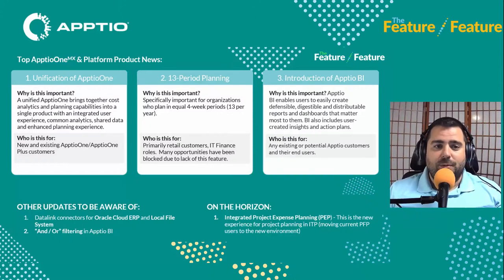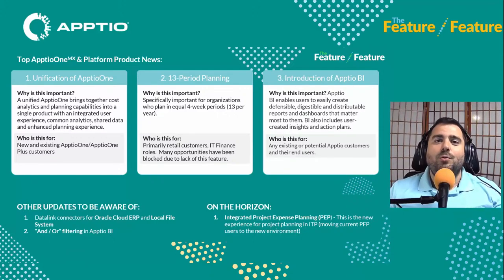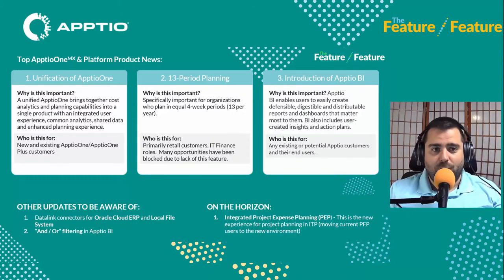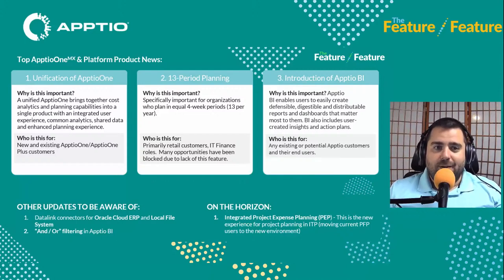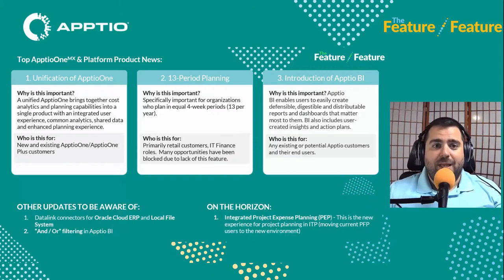We also have 13-period planning in Aptio One now. This has been a huge demand from our customers — before we basically had a planning period for every month, but we know that there's an extra period for a lot of our customers in the way they do their financial planning for that end-of-year Q4 period. So we have added a 13-period planning cycle in the application to reflect that, especially for our retail customers.